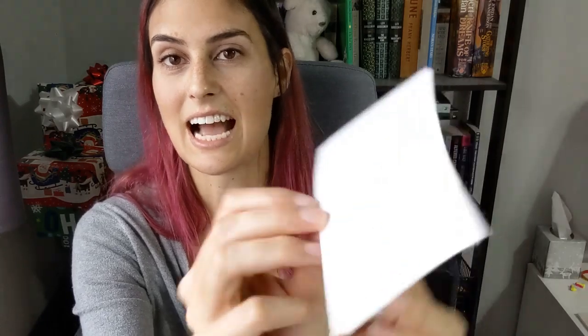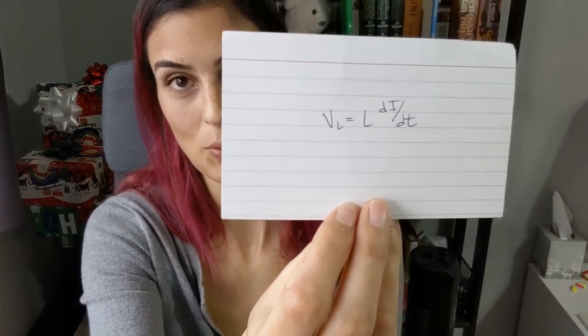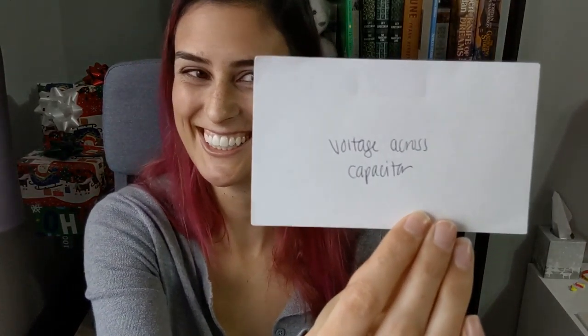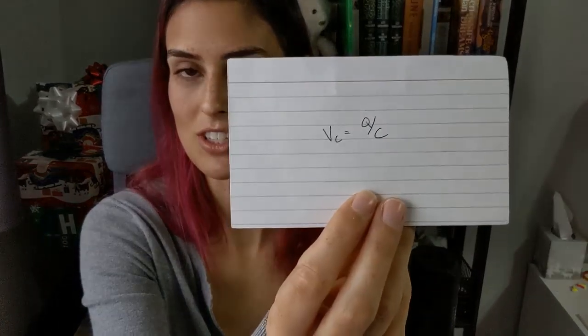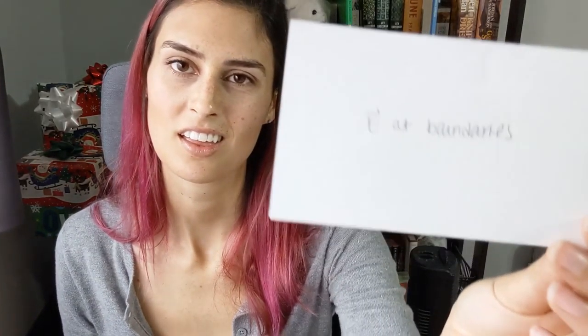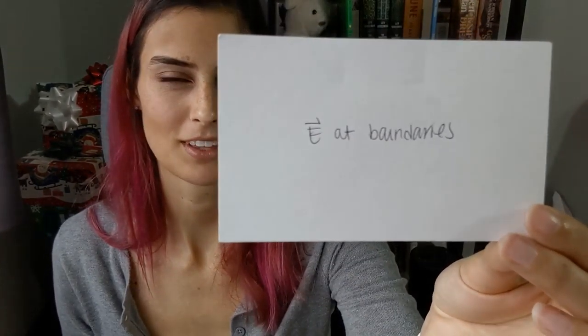Voltage across an inductor: V sub L equals L times dI/dt, where L is inductance and I is current. Voltage across a capacitor: V sub C equals Q over C, where Q is the charge and C is the capacitance.